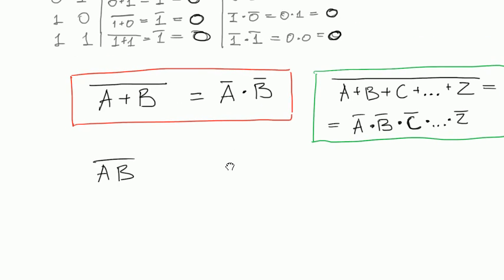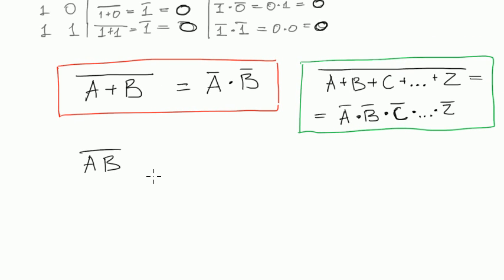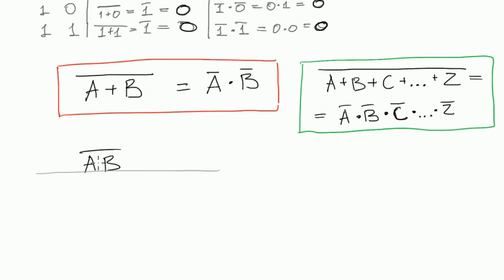And we can also create a truth table for that, so we can spare some time and do that. I want to show you. Again we have two variables A, B. 0,0. 0,1. 1,0. 1,1.